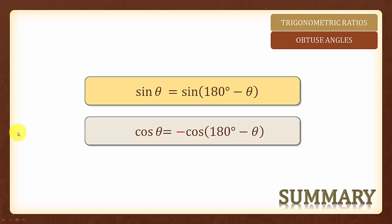In summary, given an angle theta, the trigonometric ratios for the acute and obtuse angles of sine are the same, while the trigonometric ratios for the acute and obtuse angles of cosine are negatives of each other. If theta is acute, then 180 degree minus theta will be the obtuse angle. Vice versa, if theta is obtuse, then 180 degree minus theta will be the acute angle. And it does not matter which is acute or which is obtuse — this relationship will still hold. And that's all for this topic.